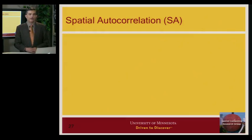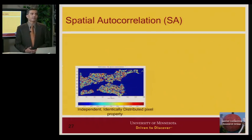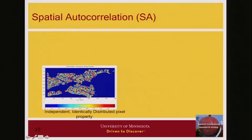Let's go back to spatial autocorrelation — that's one of the core concepts in this video. Here is a map of a wetland created using the IID assumption. This is a raster map — imagine a set of pixels — and for each pixel we have assigned a color: blue is low and red is high. In this map, colors are generated for each pixel independently of all other pixels, giving it a very grainy appearance, almost like white noise.